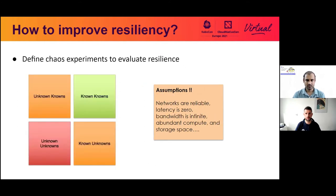Chaos engineering is a discipline, a very scientific one. There are a lot of assumptions we go ahead with when we write or deploy applications — we assume networks are reliable, latency is nearly zero, we have infinite bandwidth, abundant storage and compute resources — but that's not always the case. We want to simulate these conditions and find out what happens. Some failures have known results — we call them known knowns — and it's important to run chaos experimentation repeatedly to verify that still holds true.